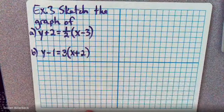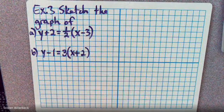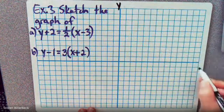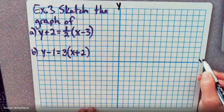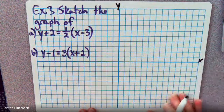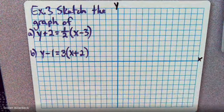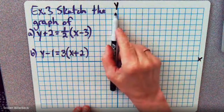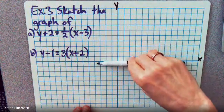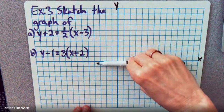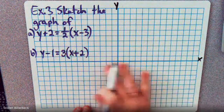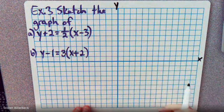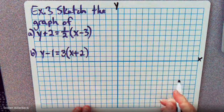So let's sketch the graph of this. So first we mark our graph — the Y and X axes on the grid. Y is always the vertical, dependent axis. X is always the horizontal, independent axis.